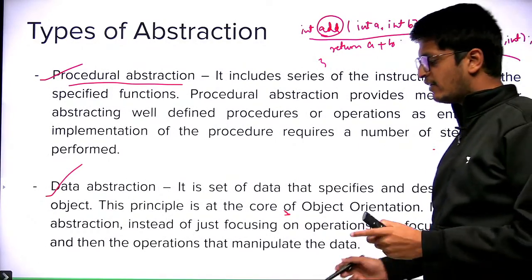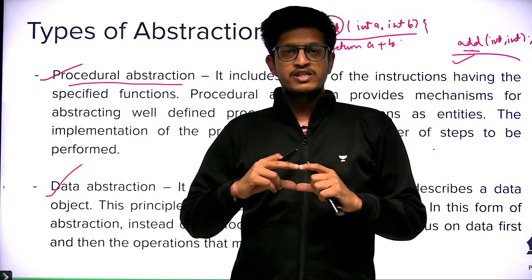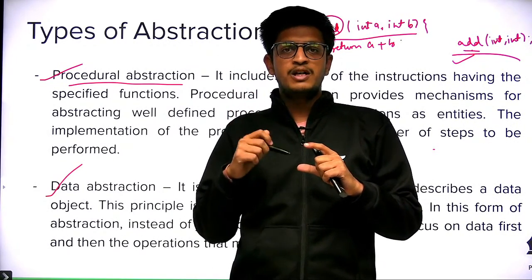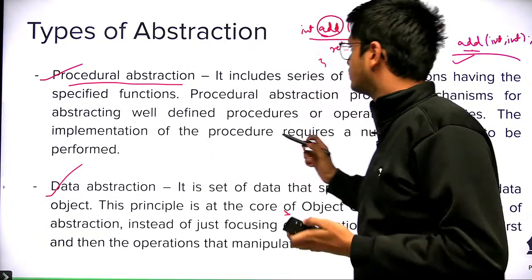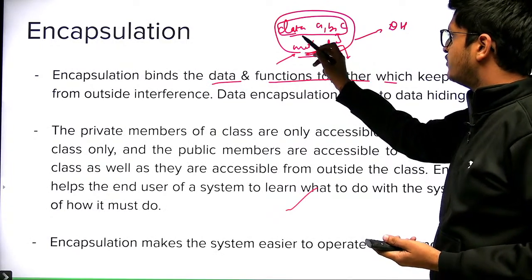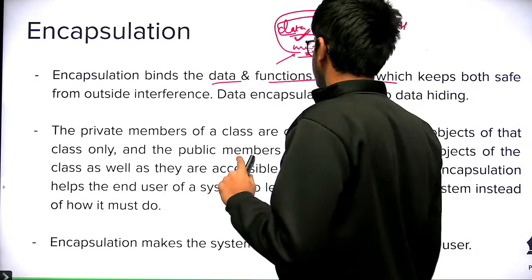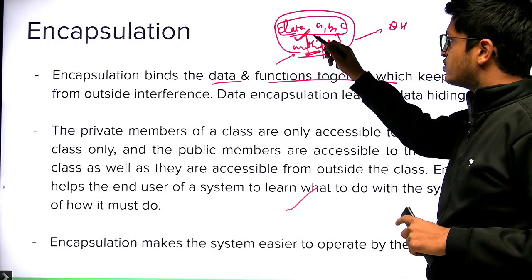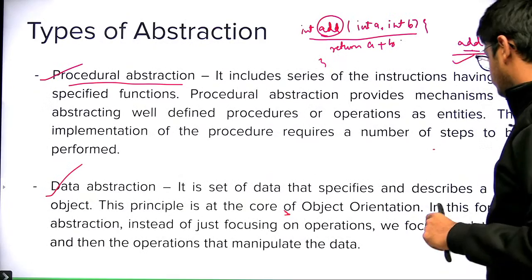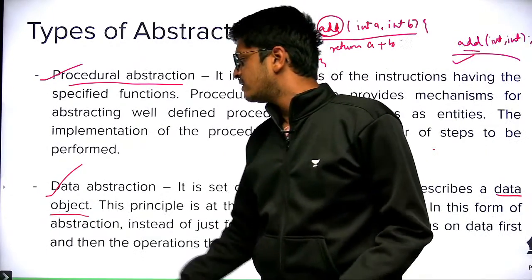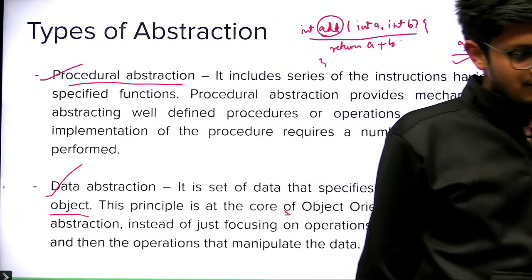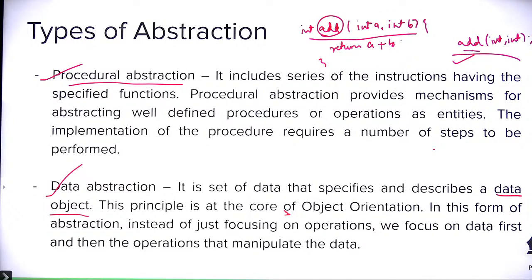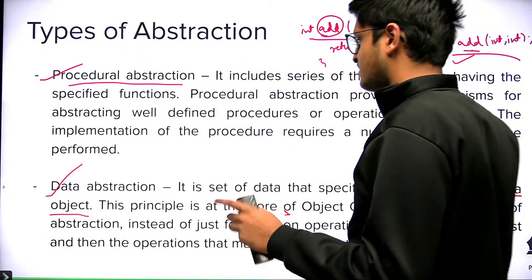Data abstraction is when you have data as well. When you write functions that are meaningful only to a certain set of data — this happens in classes and objects. When you write certain methods meaningful to a certain set of data only, this is called data abstraction. So when you have some data object and you are creating procedures for that particular data, it is called data abstraction. Abstract classes is a different concept — we will see that in detail later.